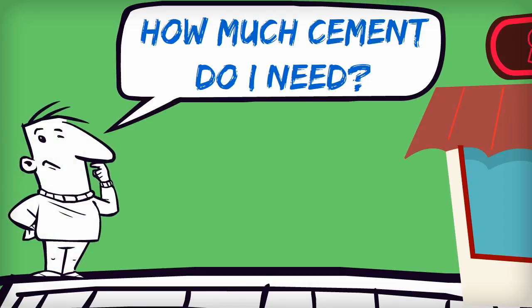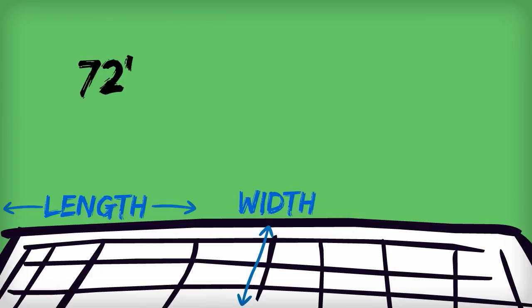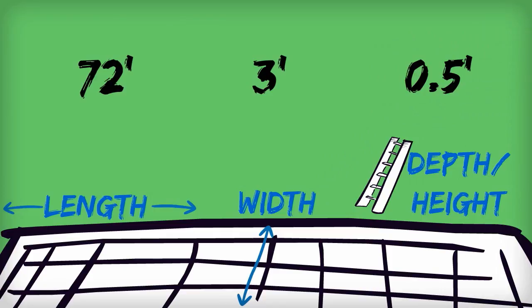So the first step is to multiply the length, width, and depth together to determine the cubic feet of the space.